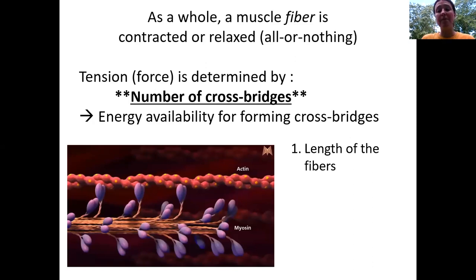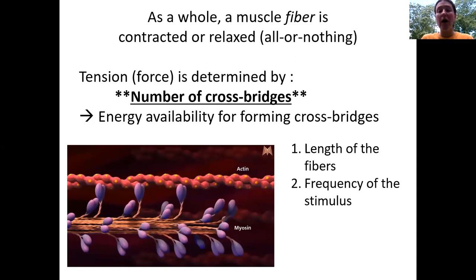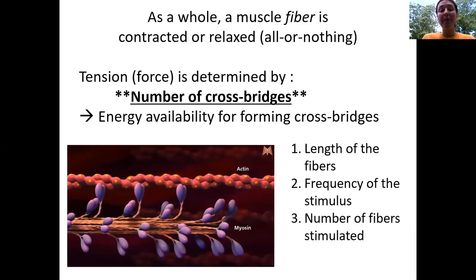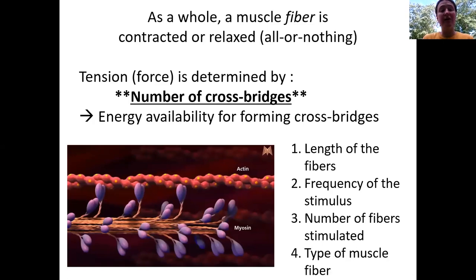We're talking about four different factors which vary the number of cross bridges that can be formed. First, the resting length of the fibers — whether the muscle cell is stretched or not at the time contraction begins will affect how much tension that muscle can produce. Second, the frequency of the stimulus — whether we stimulate once and wait, or rapid-fire stimulate repeatedly. Third, the number of fibers stimulated — to lift a dumbbell instead of paper, you need to stimulate more fibers. Finally, not all muscle fibers are created equally — we can activate different types to increase or decrease strength.